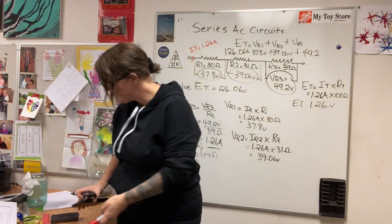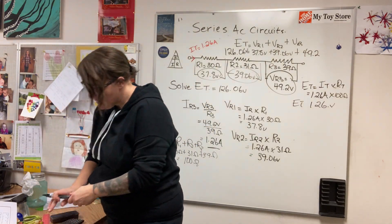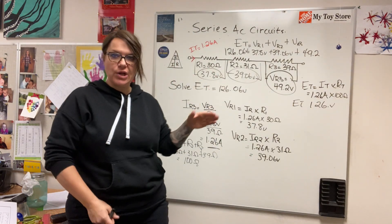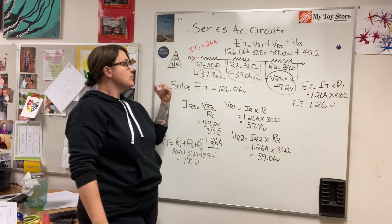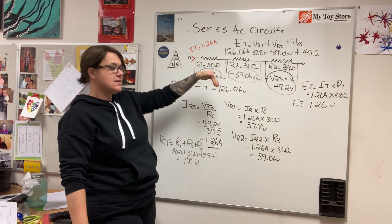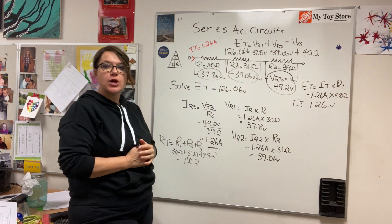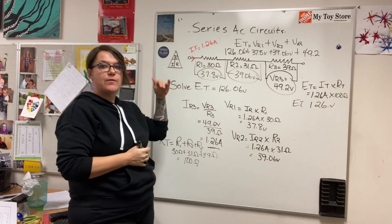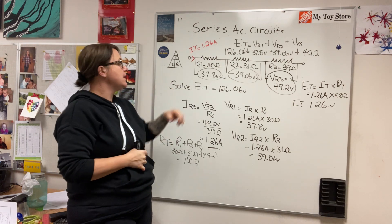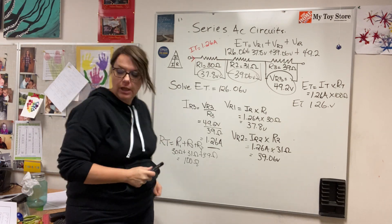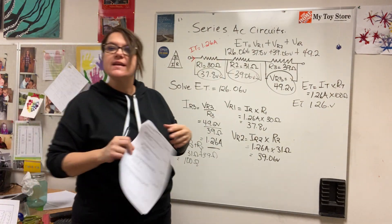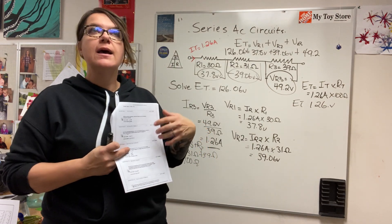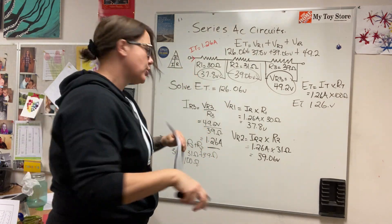So that's the first example. In a series circuit, current is constant, resistances are additive, and Kirchhoff's voltage law applies — the sum of the volt drops will equal your supply voltage. Next I want to do an inductive circuit.